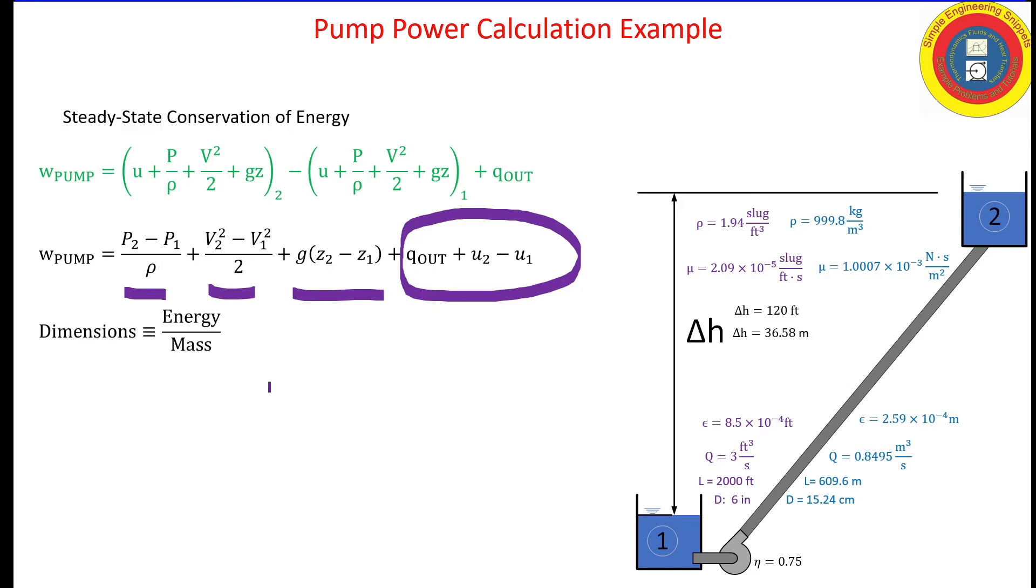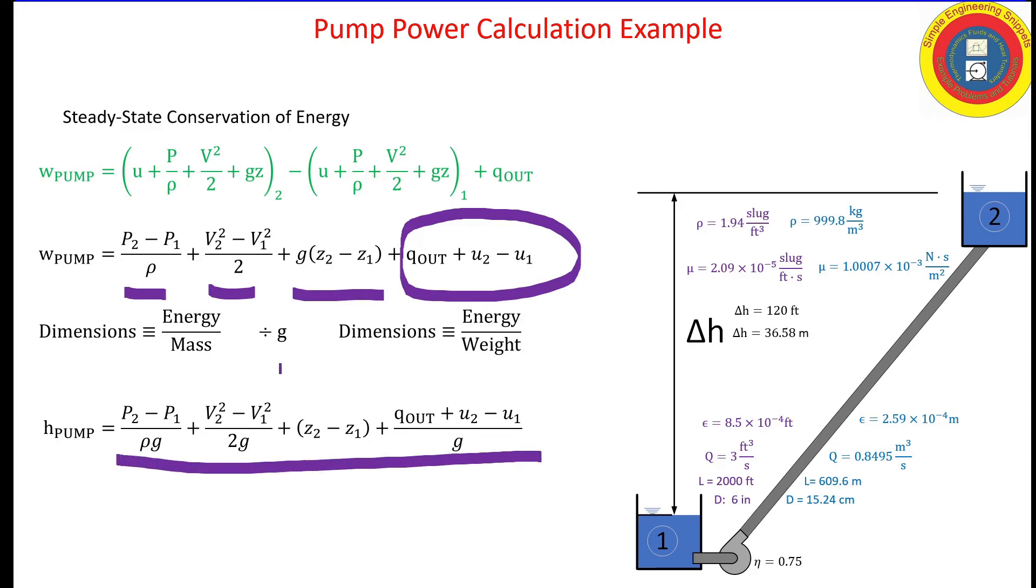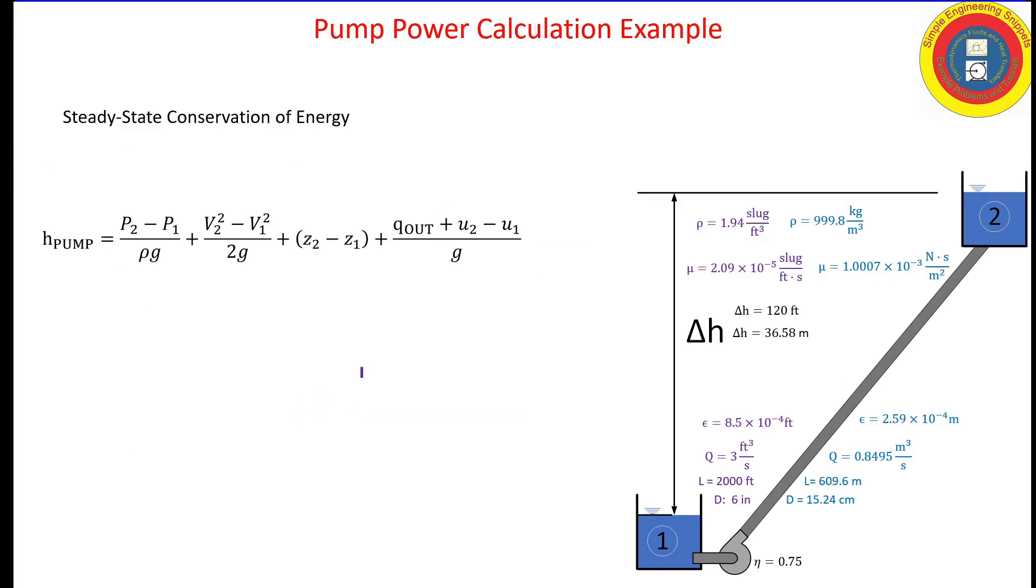We are in energy per mass, and we want to go to energy per weight. To do that, we multiply the denominator by the acceleration of gravity to obtain energy per weight. When we do that, we get head of the pump is equal to the same terms, but now they've been modified as we divide through by the acceleration of gravity.